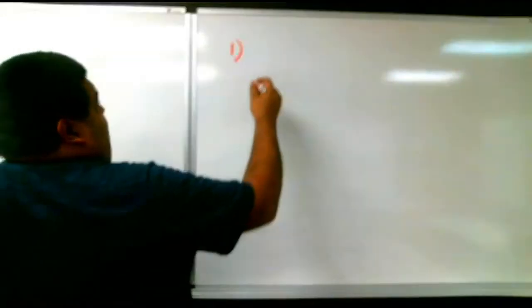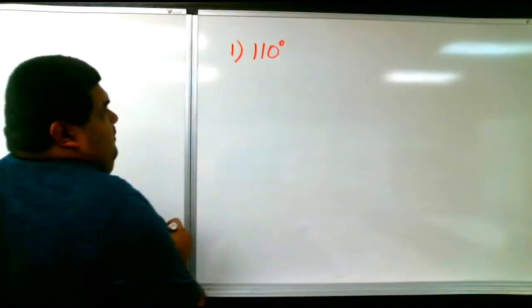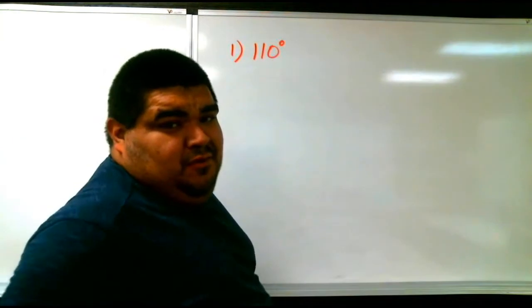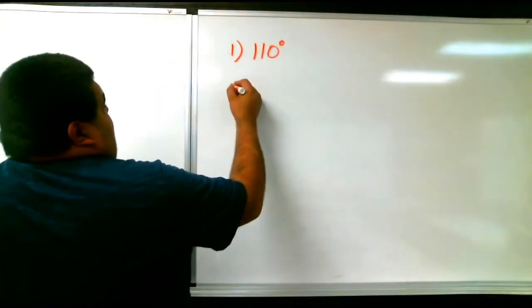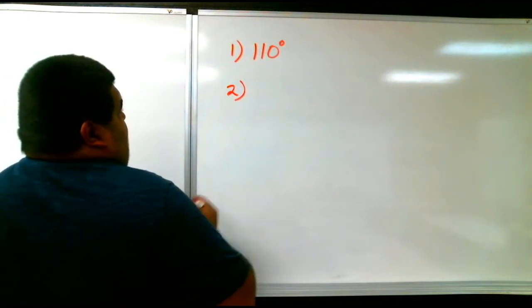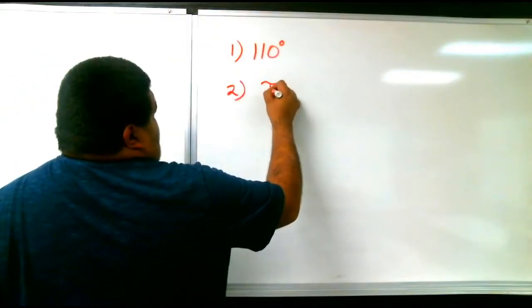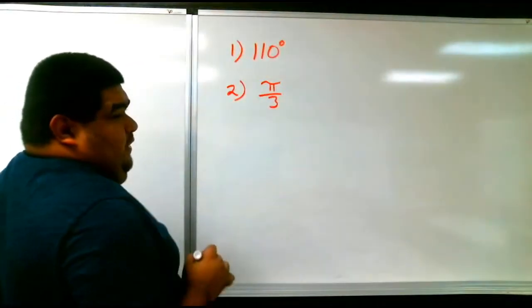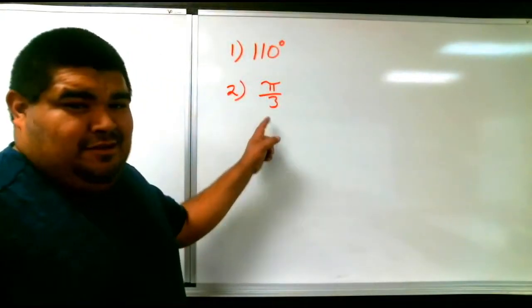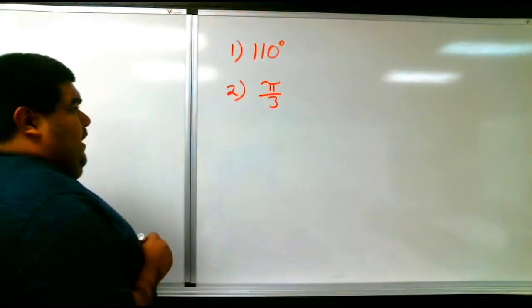Show me how it would look for 110 degrees. Give me the positive angle and the negative angle for 110. Your second one would be pi over 3. How would that look? Hint hint. Look at the unit circle. It's a radian.